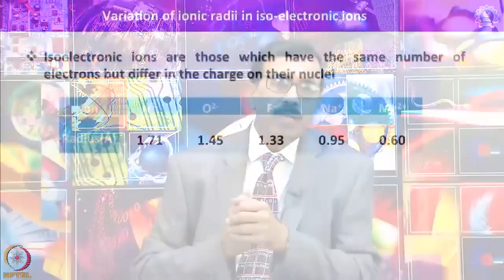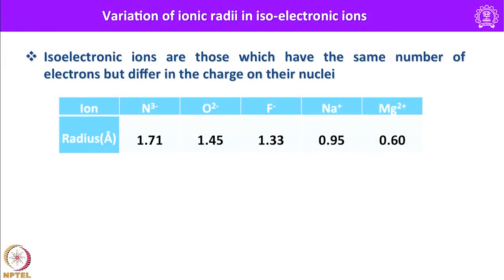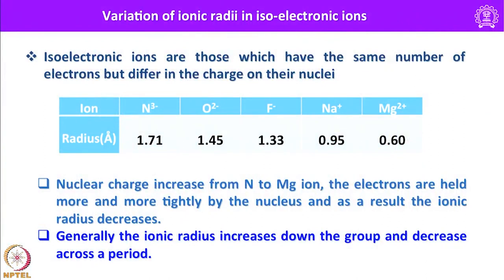In this isoelectronic series, the number of electrons is confined to 10 — all these species have the neon electronic configuration. Looking at the ionic radii: N³⁻ is 1.71 Å, O²⁻ is 1.45 Å, F⁻ is 1.33 Å, Na⁺ is 0.95 Å, and Mg²⁺ is 0.60 Å. The ionic radius decreases in this order because the nuclear charge increases from nitrogen to magnesium; the electrons are held more and more tightly by the nucleus, and as a result the ionic radius decreases. Generally, ionic radius increases down a group and decreases across a period.